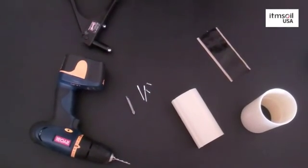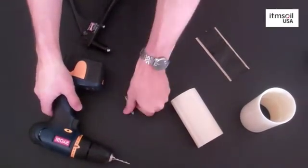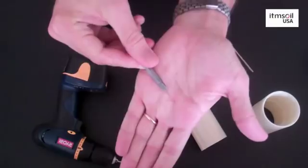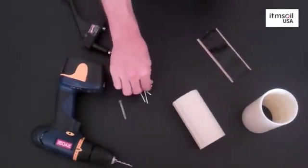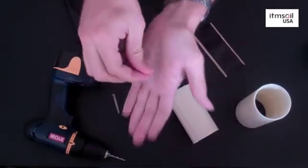The second method uses self-tapping screws and requires the following: a hand drill with a Phillips head bit and 1⅛ inch small self-tapping screws.